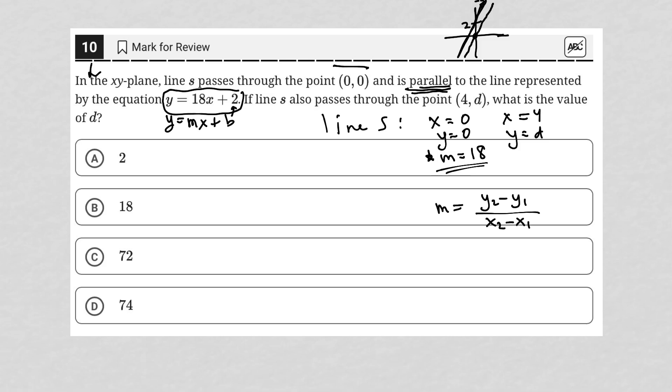We've been provided with two x values and two y values, so I'm going to say my y₂ is d, my y₁ is 0, my x₂ is 4, and my x₁ is 0.